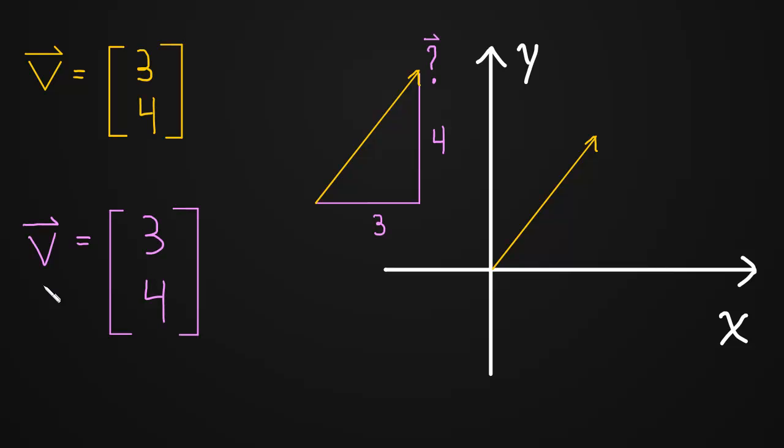And that's interesting. That tells us that vectors are independent of where they are in the plane. Meaning you can take a vector and translate it around the plane anywhere you want and it doesn't change the vector.